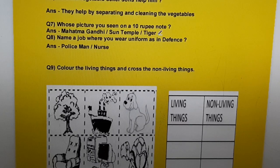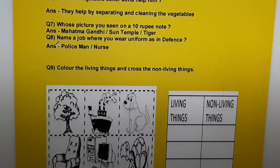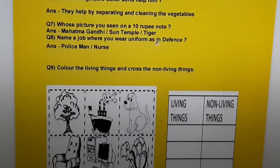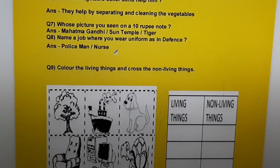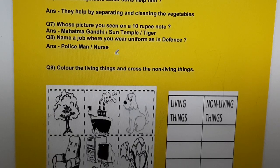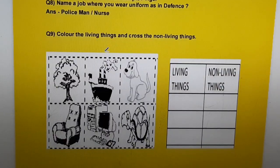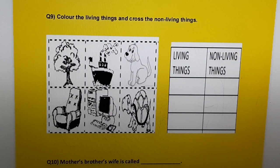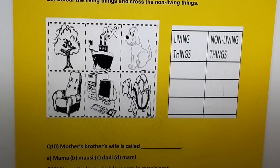Question seven: Whose pictures are seen on a 10 rupee note? Answer: Mahatma Gandhi, Sun Temple, tiger. Question eight: Name a job where you wear a uniform, as in defense. Answer: policeman, nurse, or doctor.